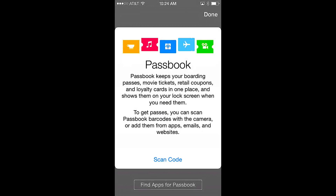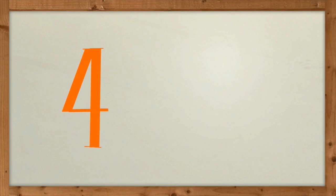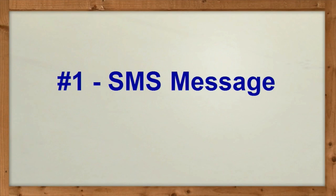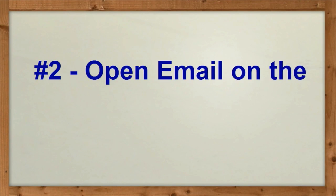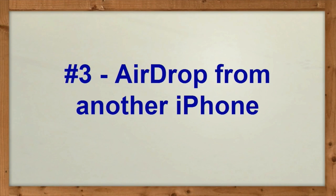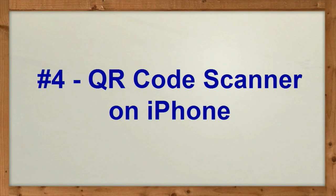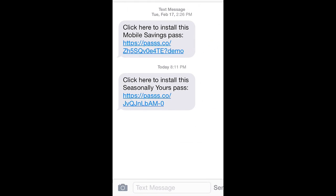Now you might be asking, Mike, how do passes get into Passbook? Well, passes are installed into Passbook one of four ways: SMS messages sent to the phone, email messages opened on the phone, AirDrop of a pass from another iPhone, or by using the Passbook code scanner to scan QR codes on screen or in print. Let's see how each of these works.